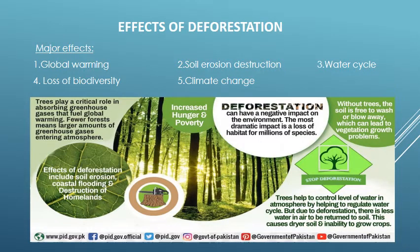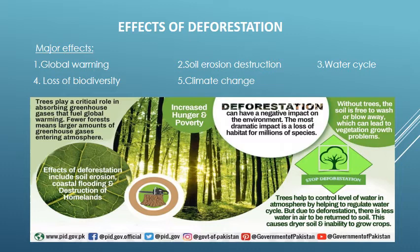The major effects of deforestation are global warming, soil erosion, water cycle disturbance, loss of biodiversity, and climatic change. Trees play a critical role in absorbing greenhouse gases that fuel global warming — fewer forests mean large amounts of greenhouse gases entering the atmosphere. Without trees, the soil is free to wash or blow away, which can lead to vegetation growth problems. Trees help to regulate the water cycle, but due to deforestation there is less water in the air to be returned to the soil, causing drier soil and inability to grow crops.